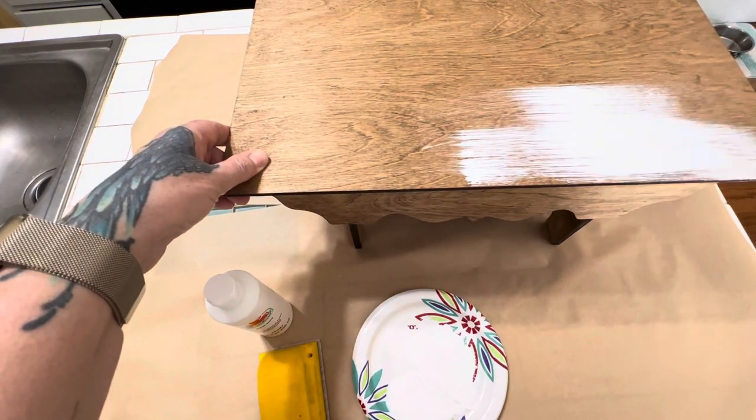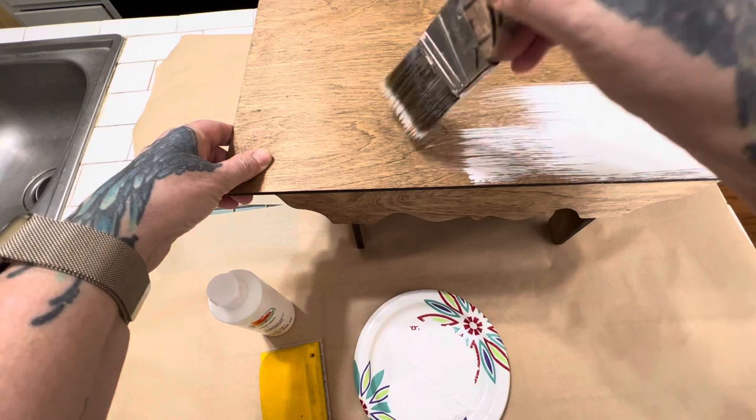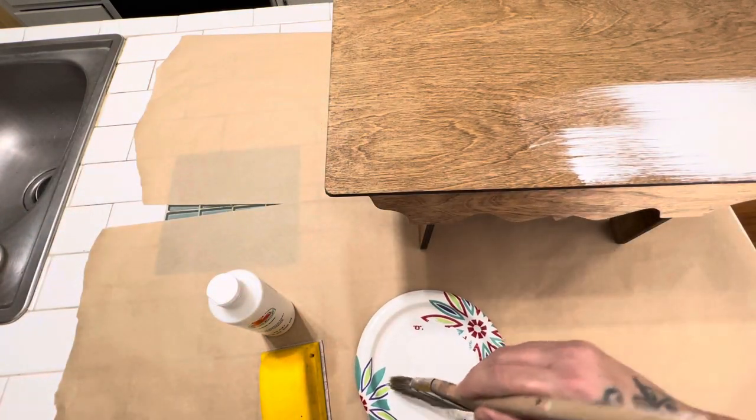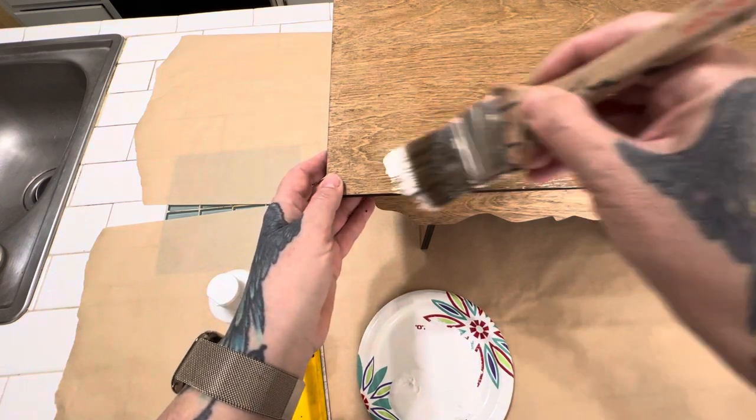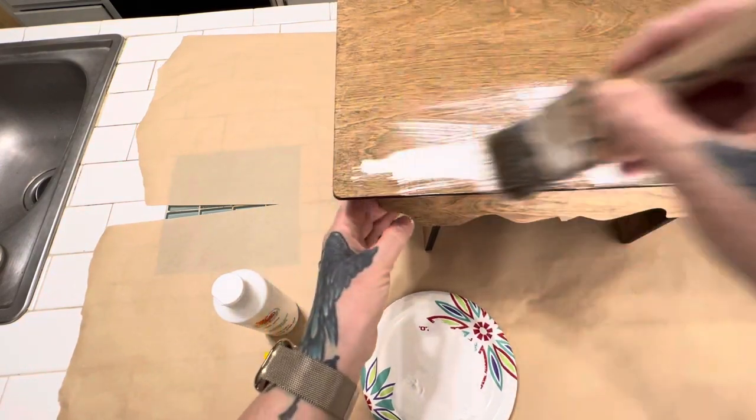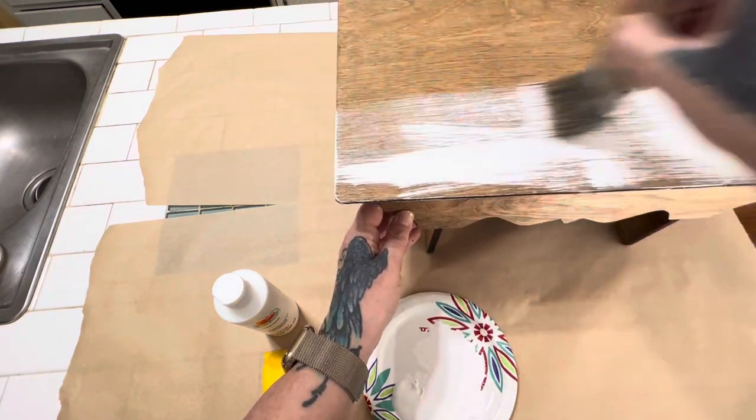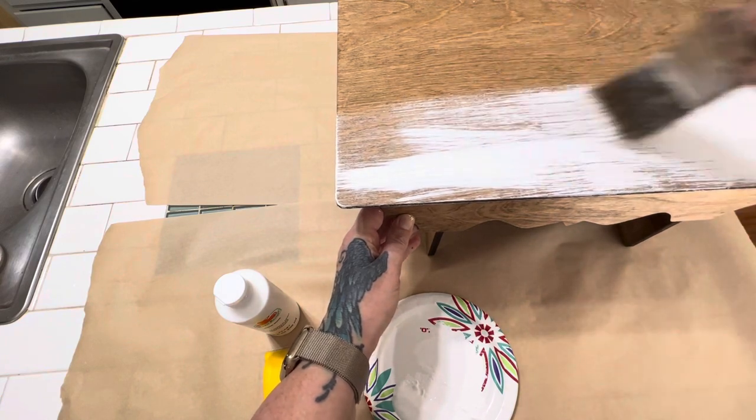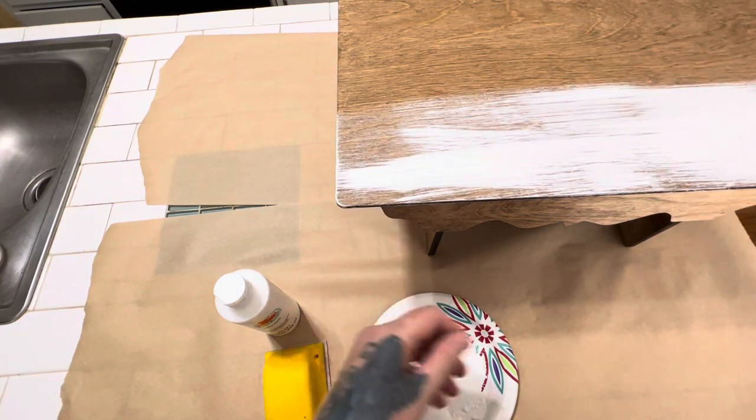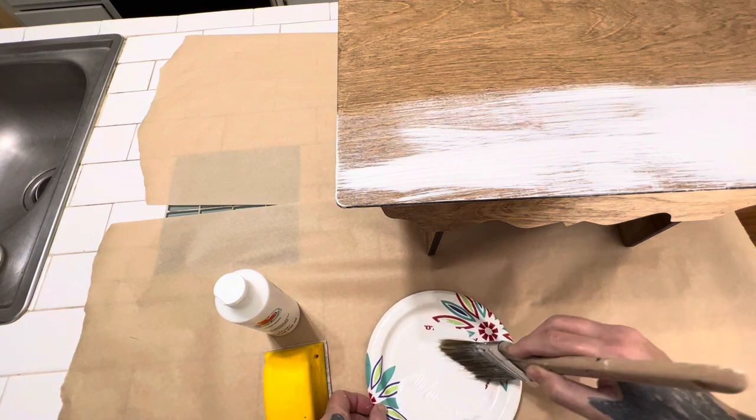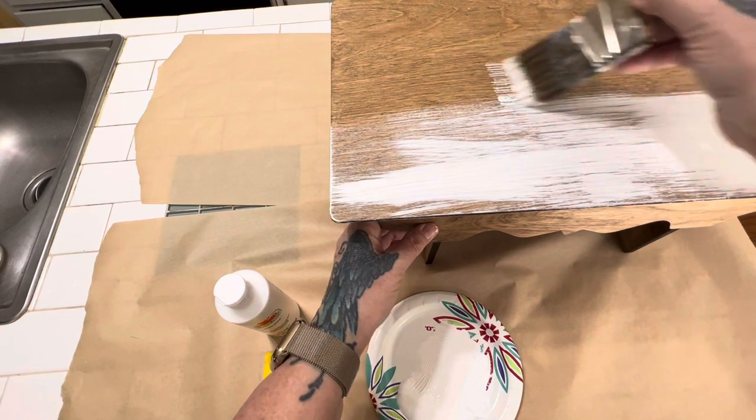You can always take some of it off. If you don't like it, if it's too much, then you just take a sander and I'll show you, I got my little sanding block there. This is it.